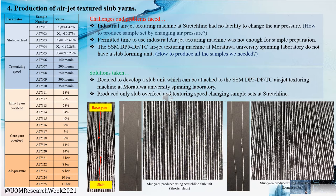When conducting the tests, we faced a few challenges. The industrial machine did not have the facility to change air pressure, and the permitted time to use the industrial air jet texturing machine was not enough for full sample preparation. Also, the air jet texturing machine at the University of Moratuwa did not have a slab forming unit, even though it had the facility to texture the yarn. So we decided to develop a slab unit which could be attached to that machine, and to produce only slab overfeed and texturing speed changing samples from the industrial machine. You can clearly see the difference between slab yarns produced from the industrial machine versus those manufactured at the University of Moratuwa.